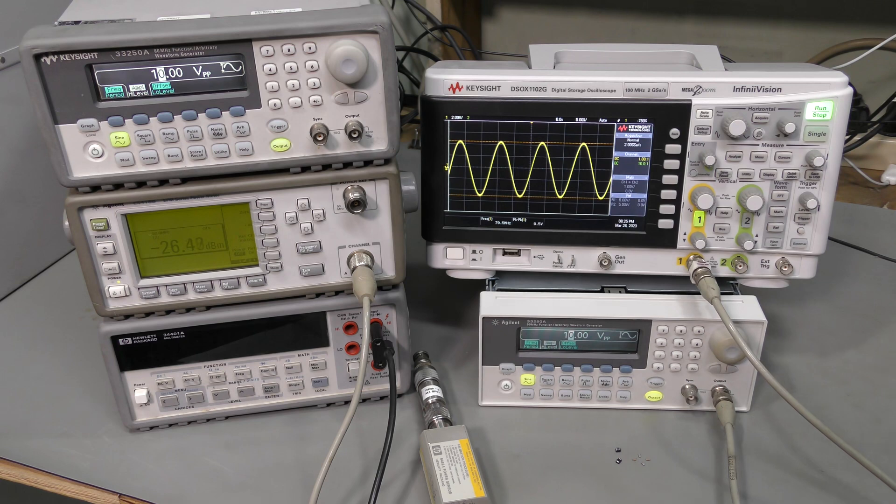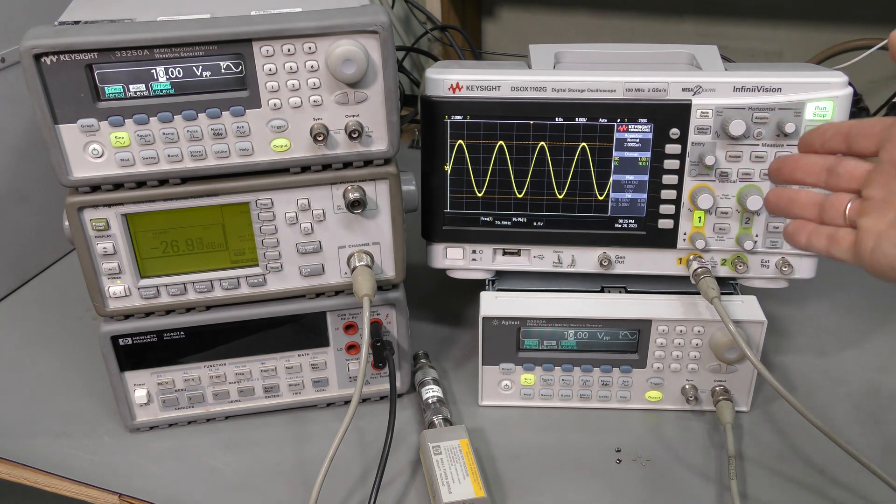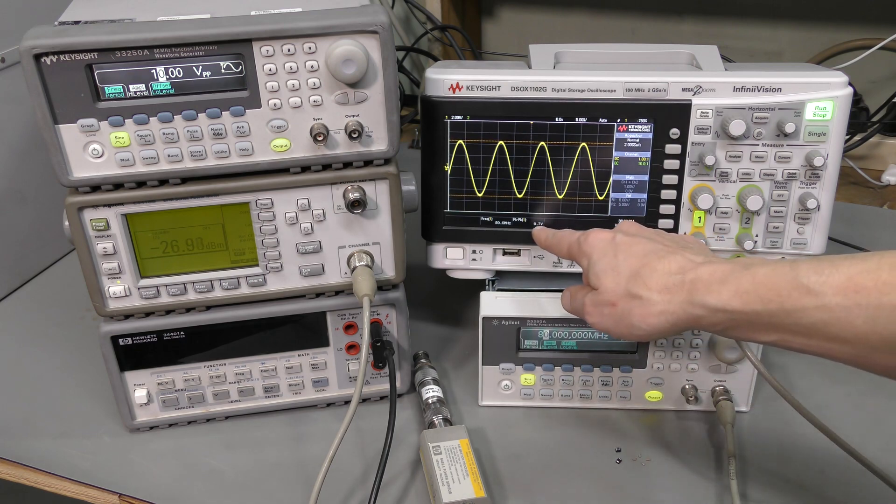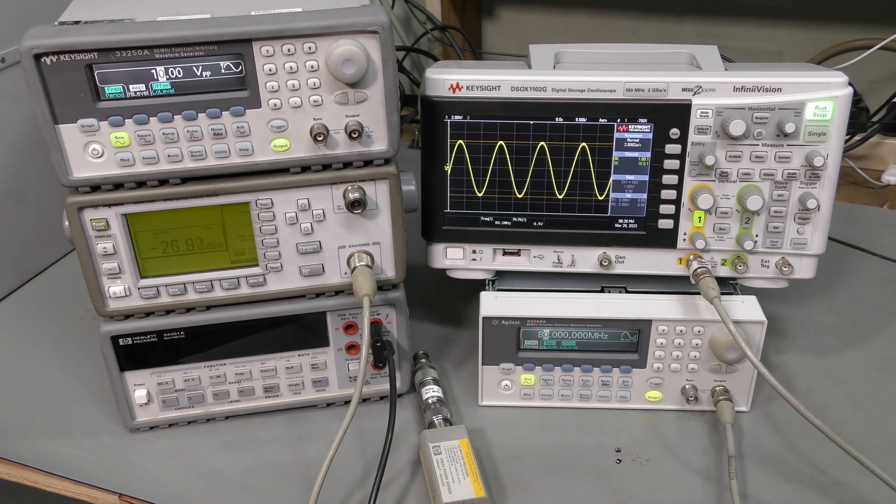So I experimented some more. And I found that removing bypass capacitors seems to help for some reason. Go figure. So I removed all of them from my little board. And here we are. Running at 10 volts peak to peak. 80 MHz. And doing just fine. I ran it like this for a couple of hours already. And it seems to be fine. The amplitude here seems to be a bit lower. Around 9.7 or so. And the Fluke scope shows a bit higher. Around 9.8. And the scopes are not very accurate. So I can show you with the power meter.